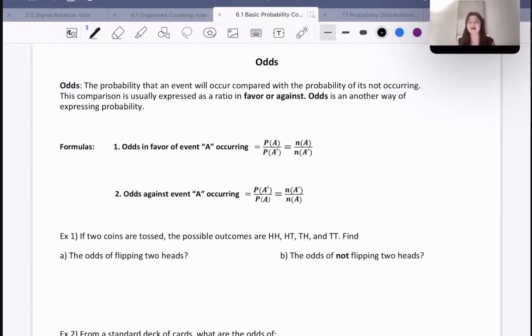Odds are a subset of probabilities. Basically, the odds are the probability that an event will occur compared with the probability of it not occurring. This comparison is usually expressed as a ratio in favor or against. Odds is another way of expressing probability, but generally when we have it for or against, we don't have any in-between areas or other third outcomes.